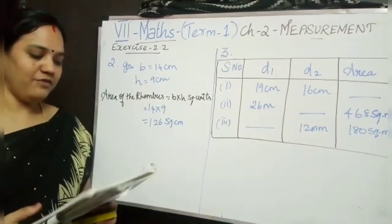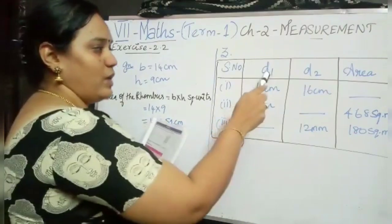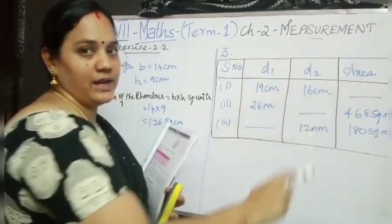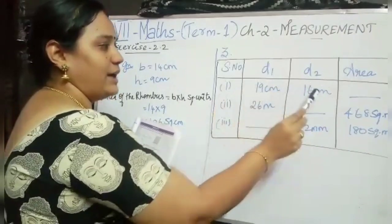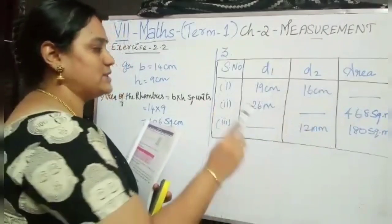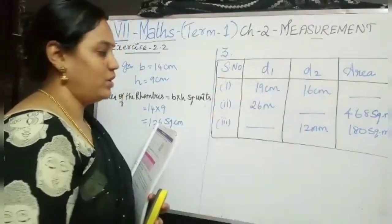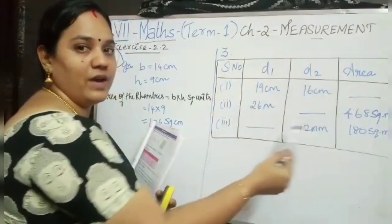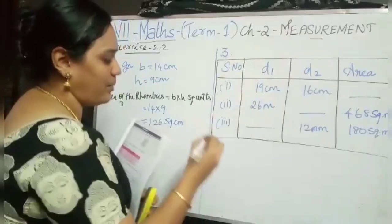Now the third problem: find the missing value. They have given D1 (diagonal 1), diagonal 2, and also an area column. In the first option, D1 and D2 are given — we have to find out the area. In the second option, D1 is given and area is given — we have to find out D2. In the third option, D2 and area are given — we have to find out diagonal 1. Shall we do the first problem?